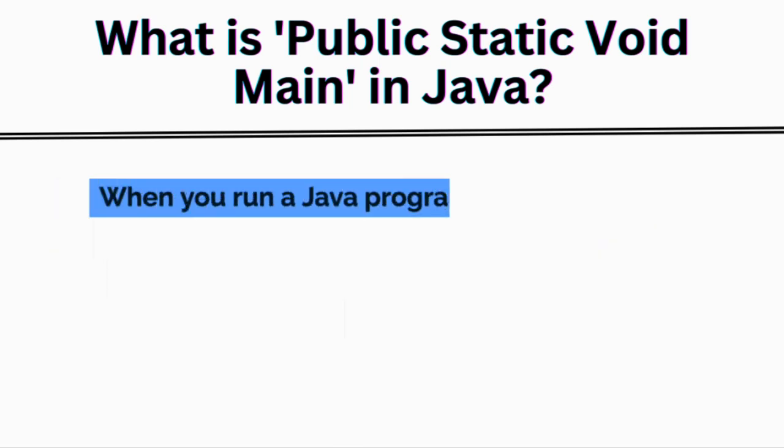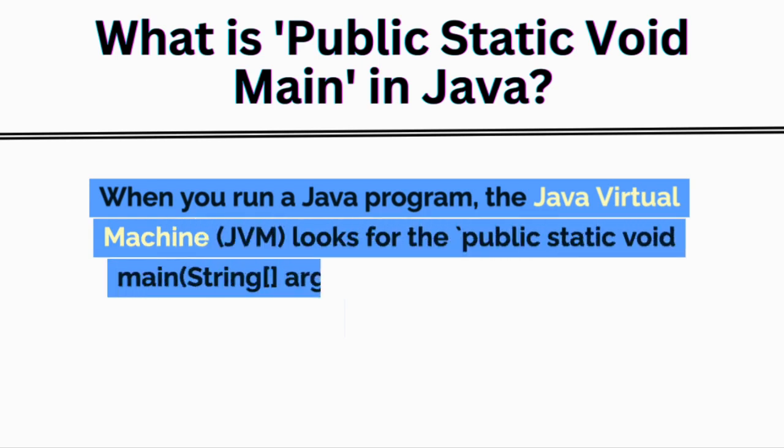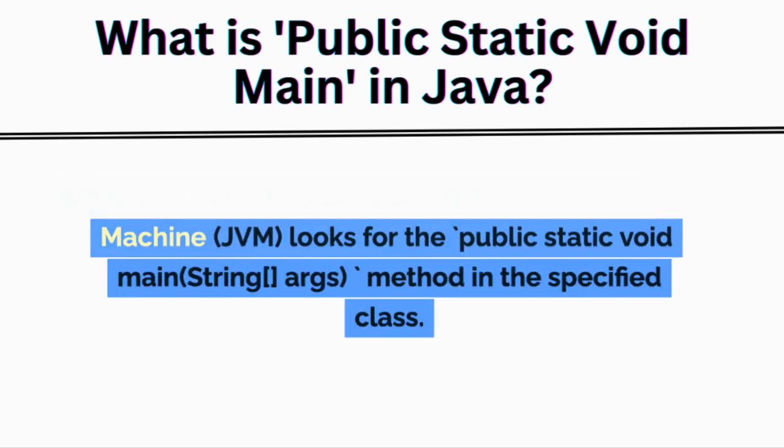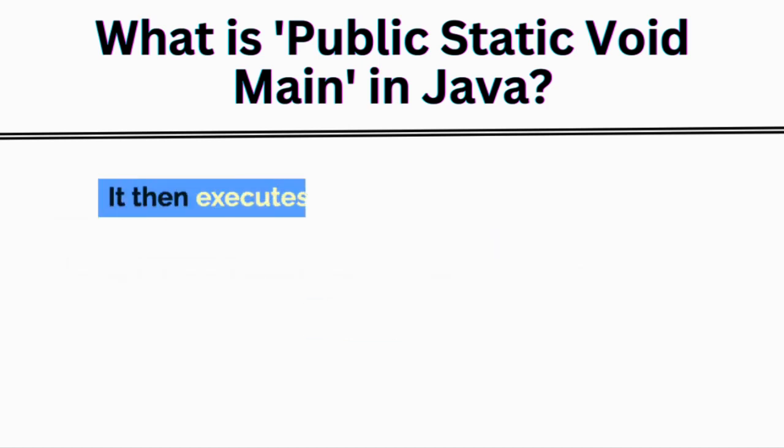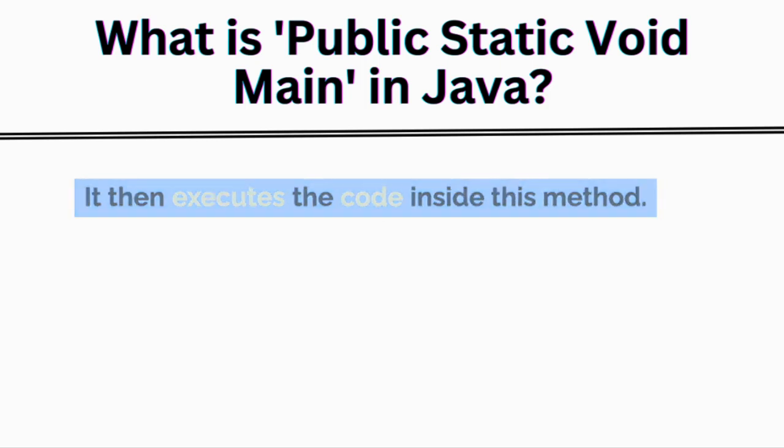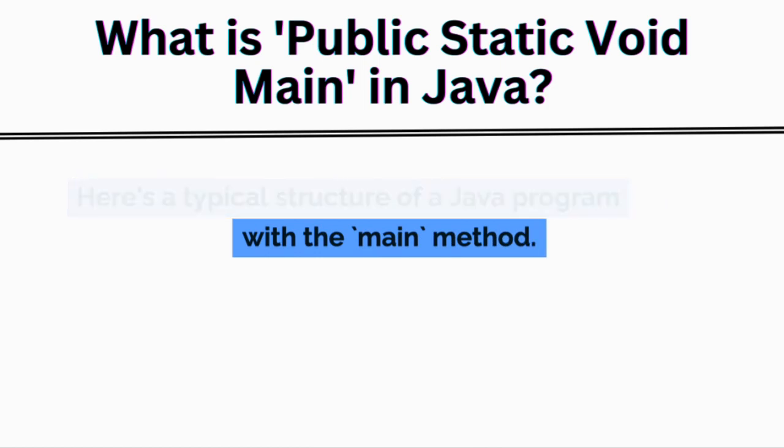When you run a Java program, the Java Virtual Machine looks for the public static void main string args method in the specified class. It then executes the code inside this method. Here's a typical structure of a Java program with the main method.